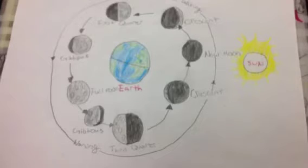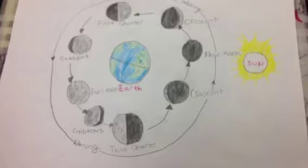Hey guys, we have a solar system. The moon orbits the Earth and the Earth orbits the Sun. But what exactly are the moon phases?